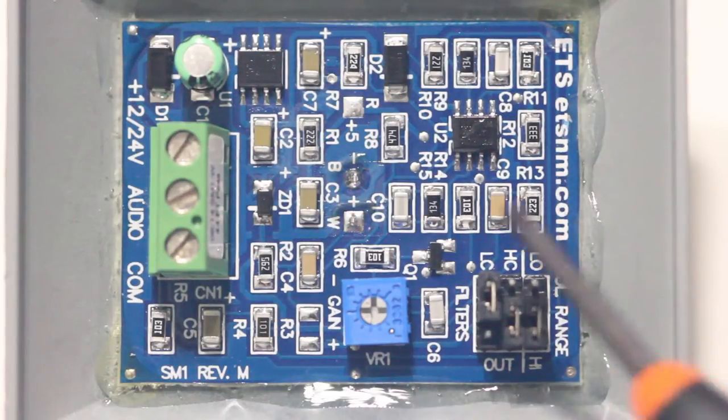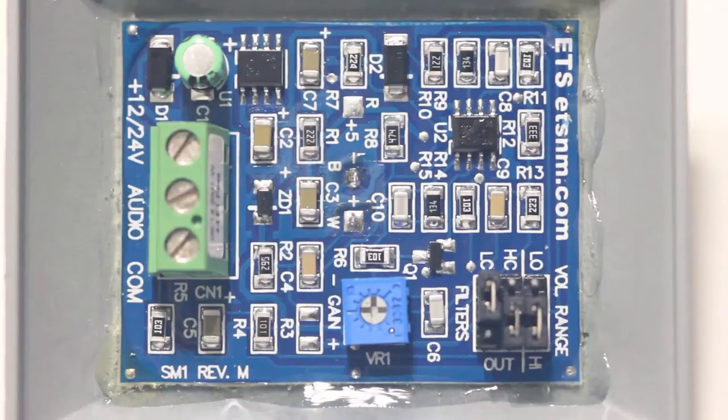It has these jumpers here which do a line level input, so by default it will be set at line level but you can also change it to mic level which I think would typically just be used for connecting directly to an IP camera.